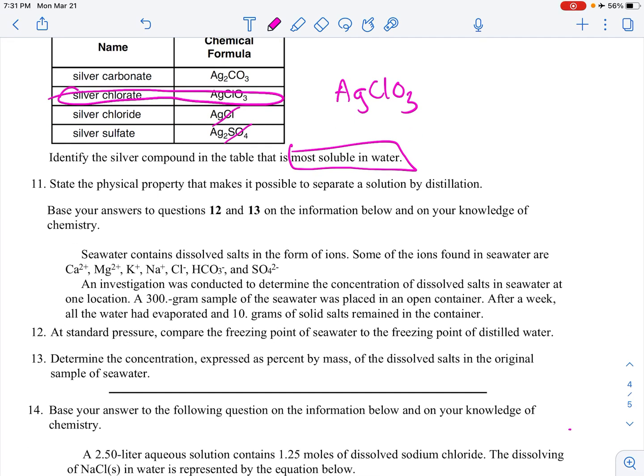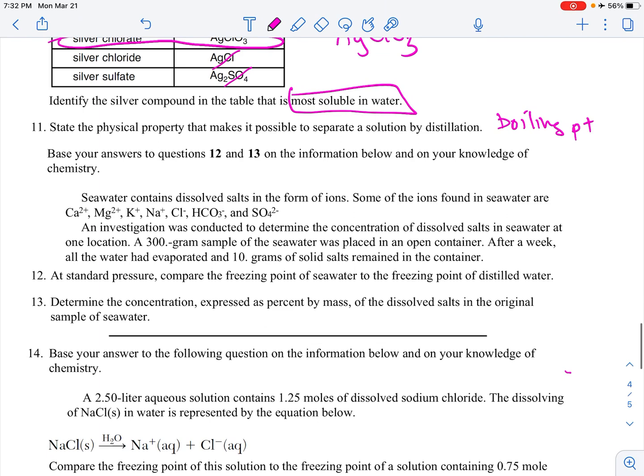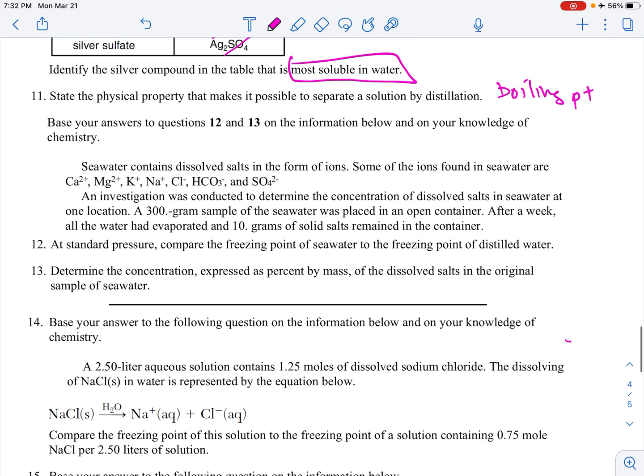Number 11. State the physical property that makes it possible to separate a solution by distillation. This is boiling point. So you separate liquids based on their boiling point. And so one boils off first. Cool and condense it. And then you've got the two separate.